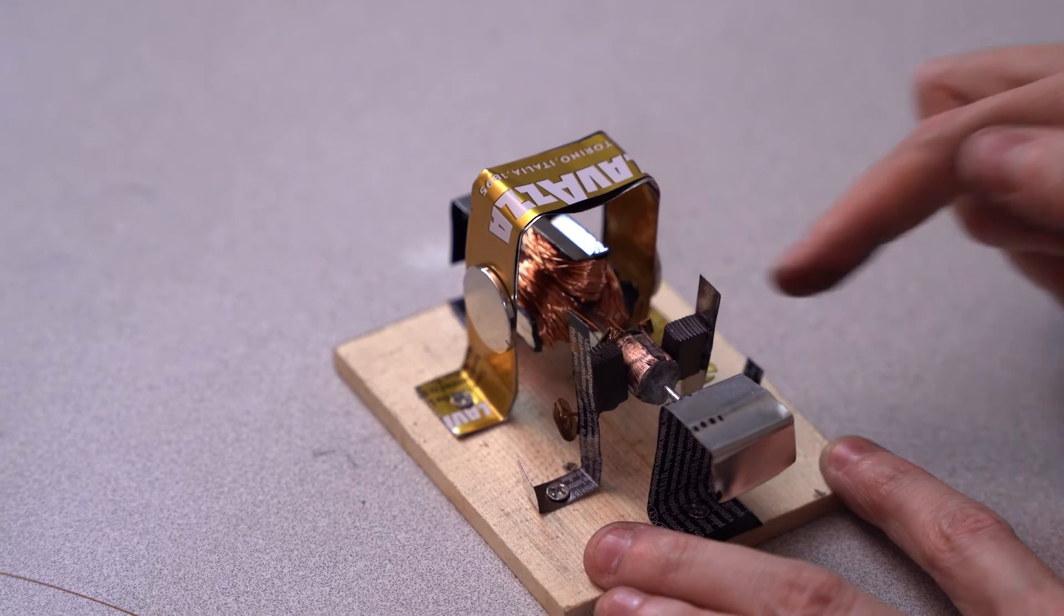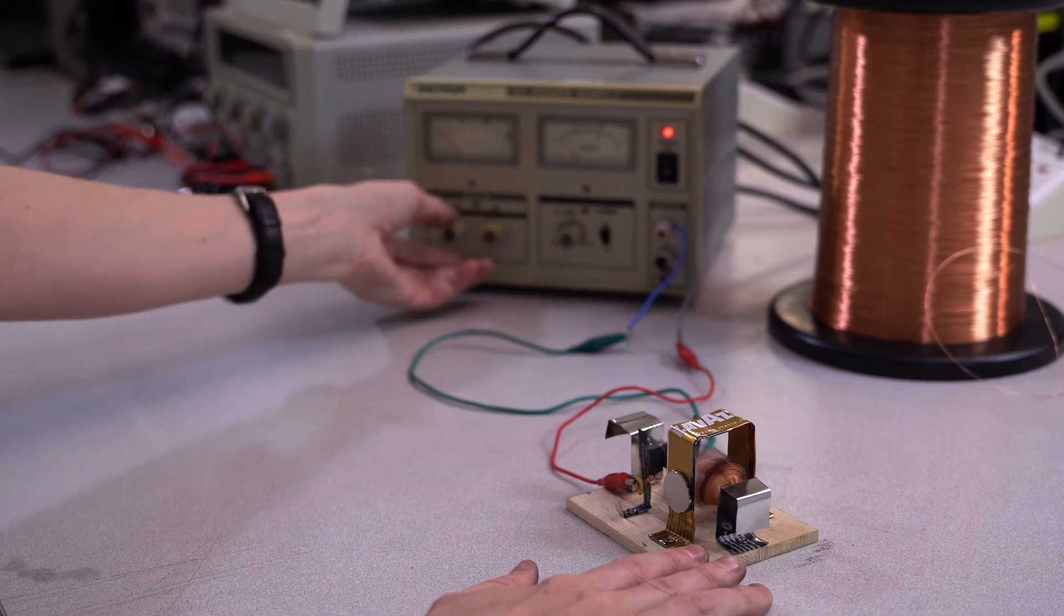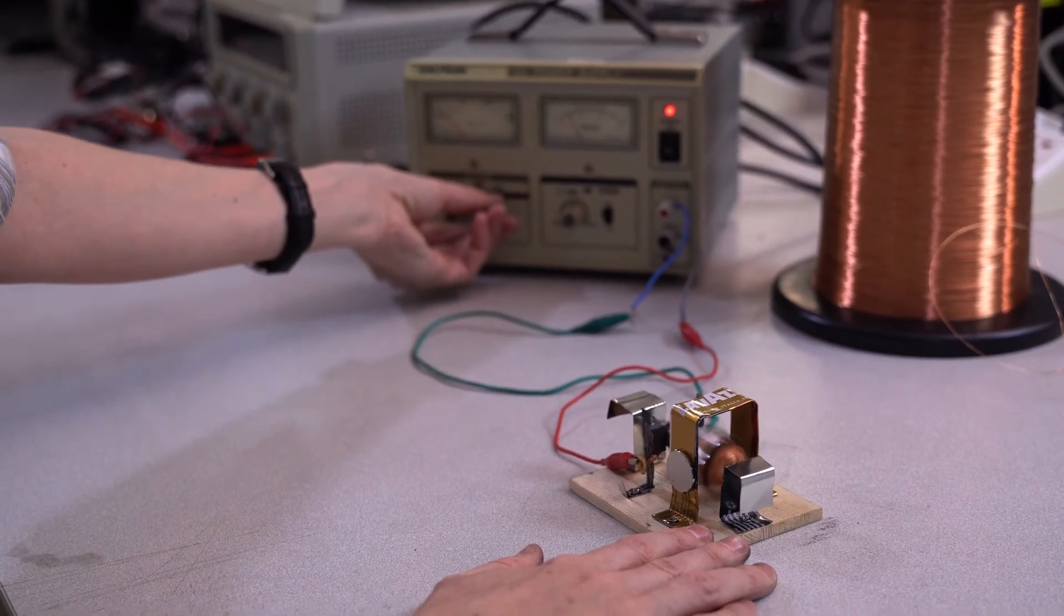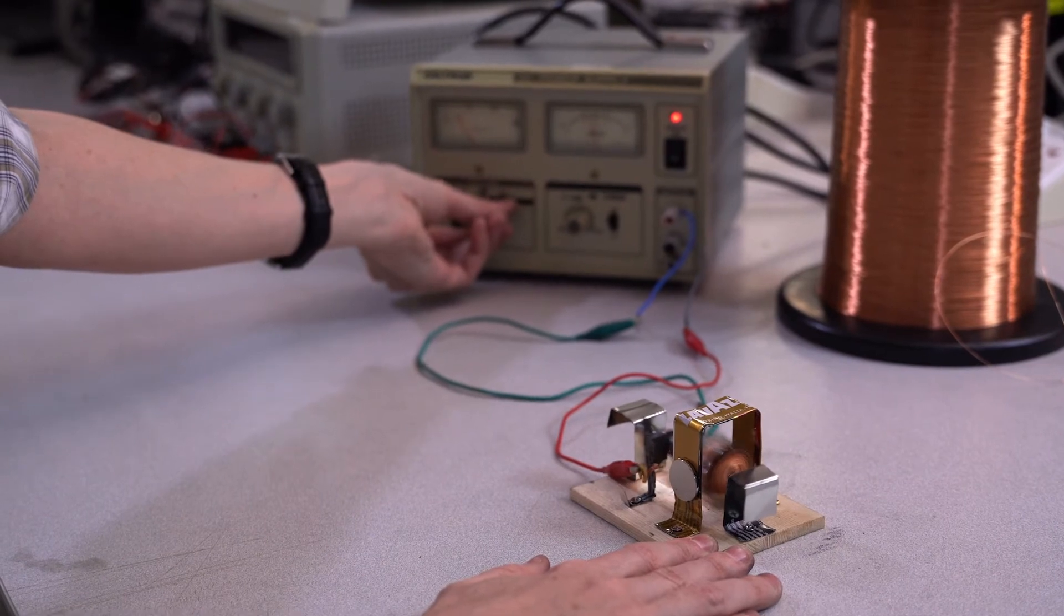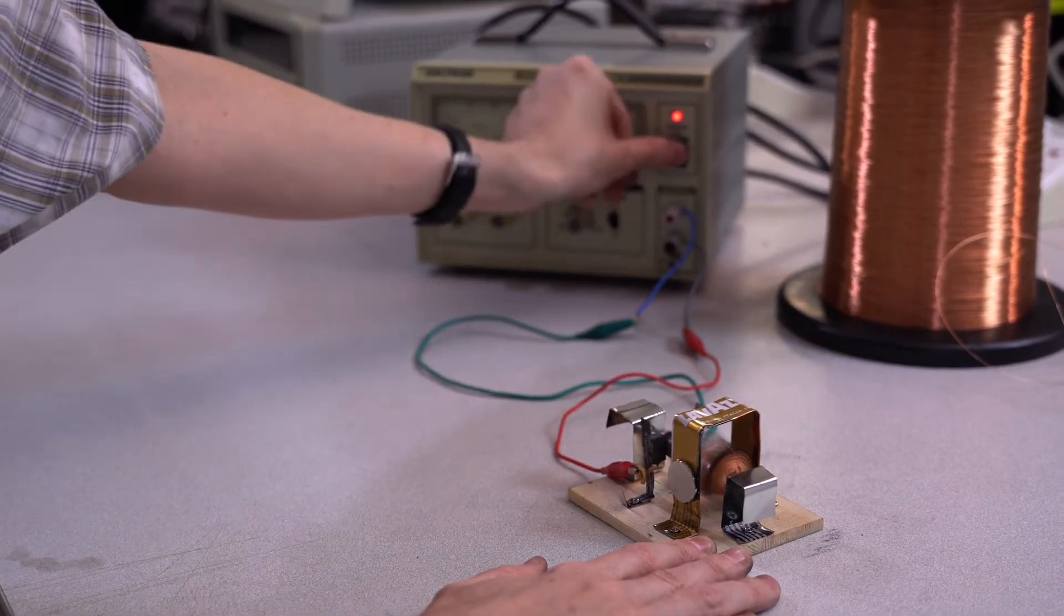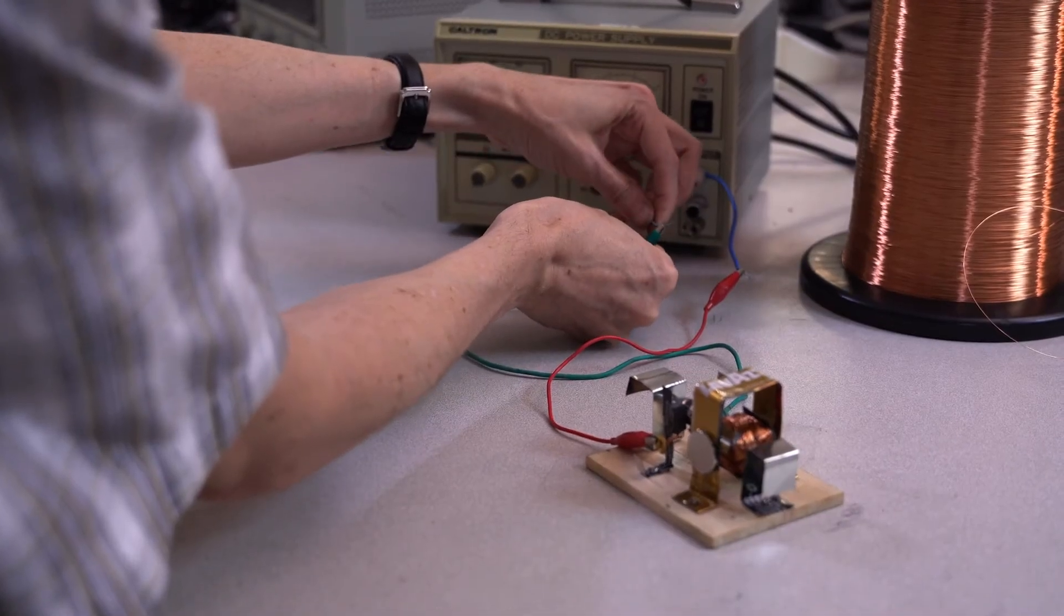Let's test out our motor with the DC power supply. It starts spinning as soon as I turn it on. If we turn up the voltage, then the speed of the motor will increase. If I switch polarity, then the motor will spin in the opposite direction.